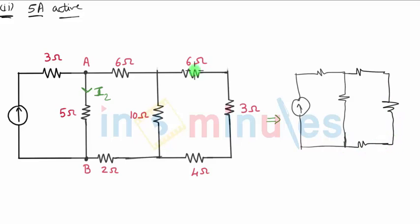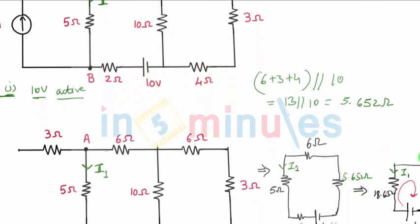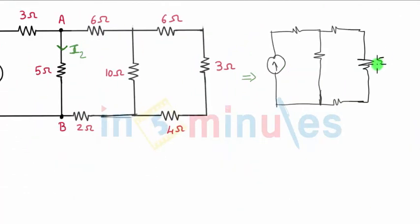6, 3, 4 in series parallel with 10 ohm, we already calculated this resistance to be equal to 5.652, so this is 5.652 ohm that we already got. This is 6 ohm, this is 2 ohm.